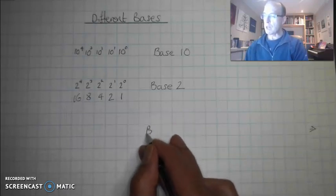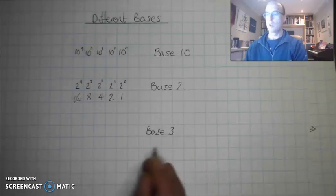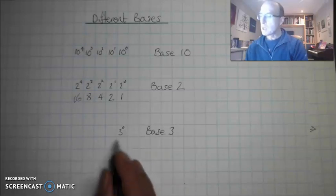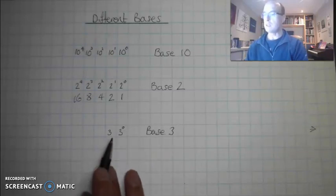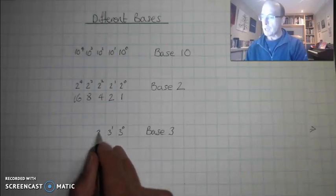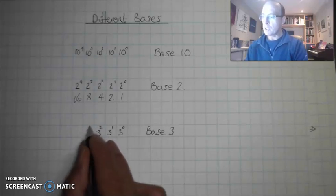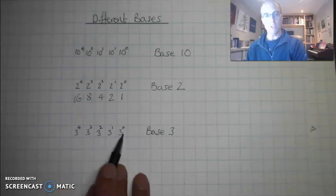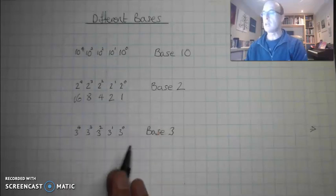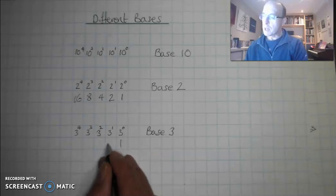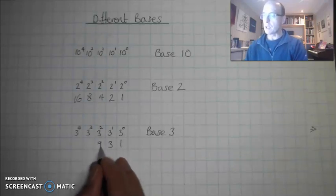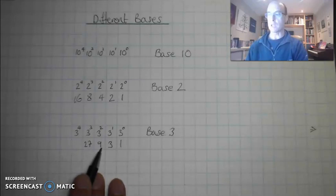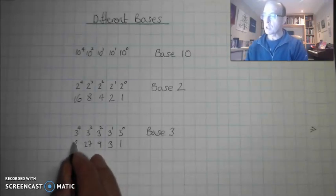If I were to look at base 3, my first position is going to have a base of 3 and a power of 0. The next position over has a base of 3 and a power of 1, then a power of 2, then 3 to the power of 3, and 3 to the power of 4. I can work out what each of these represents: 3 to the 0 is 1, 3 to the 1 is 3, 3 squared is 9, 3 cubed is 27, and 3 to the power of 4 — that's 27 times 3, also the same as 9 squared — is 81.